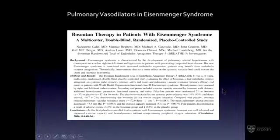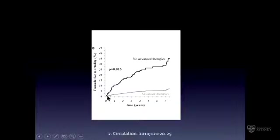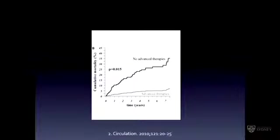In terms of medical therapy, the first randomized trial examined bosentan and showed benefit in patients with Eisenmenger syndrome. Pulmonary vasodilators clearly work, and studies comparing patients on advanced therapies to historical cohorts without them show significantly better outcomes. We use all types of pulmonary vasodilators as we would for any patient with pulmonary hypertension, with one exception: if a patient has a large shunt with right-to-left shunting, we tend to avoid intravenous epoprostenol, as an indwelling catheter puts them at risk of paradoxical embolism.